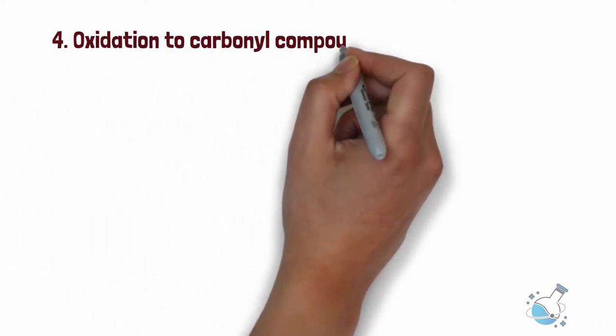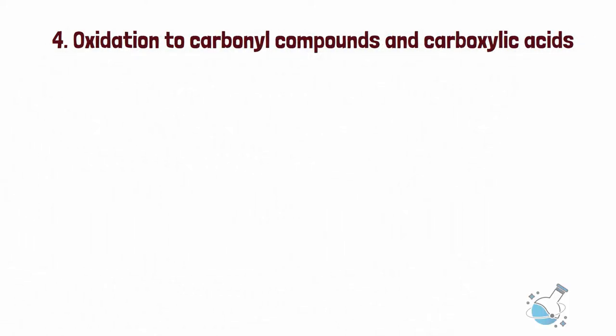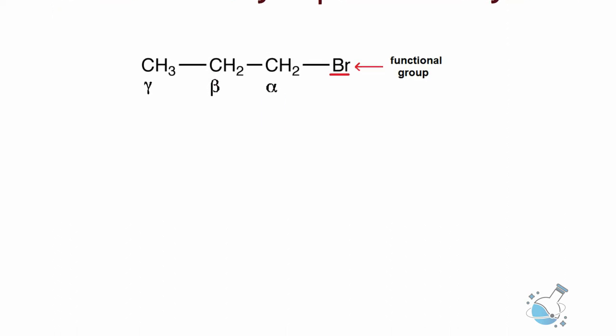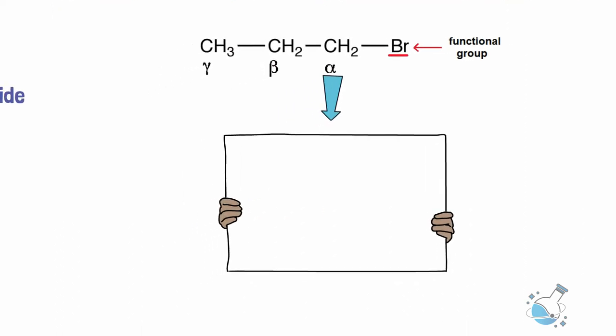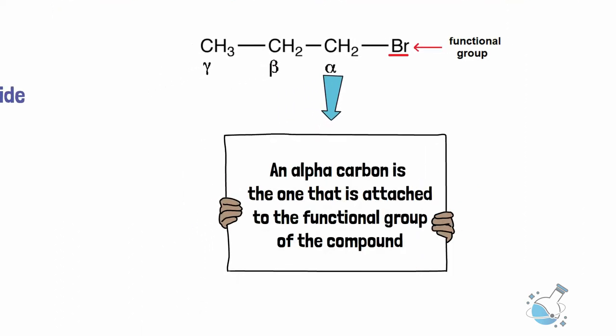Number 4. Oxidation to carbonyl compounds and carboxylic acids. Before we start studying the oxidation reactions of alcohols, let us have a discussion on what an alpha carbon is. An alpha carbon is the one that is attached to the functional group of the compound.